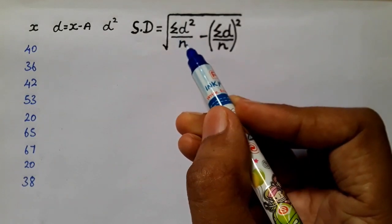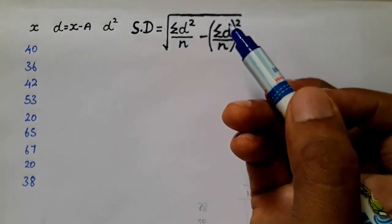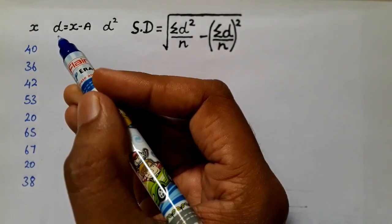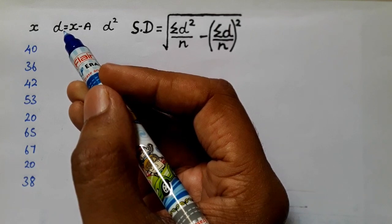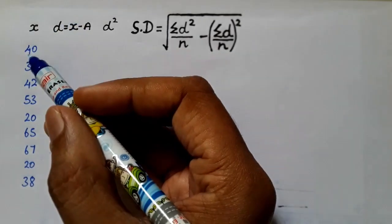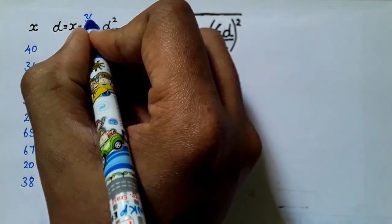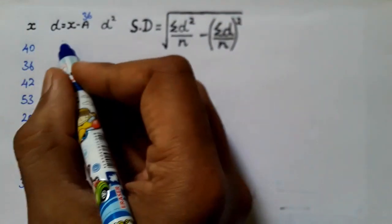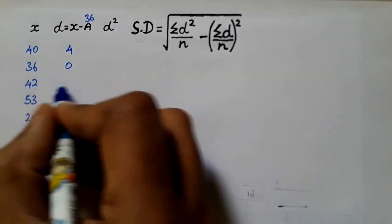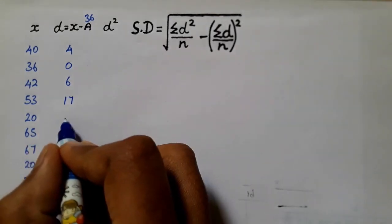Next is the standard deviation. The formula is: square root of sigma d squared divided by n, minus sigma d divided by n, the whole squared. Here d equals x minus a, where x is the value and a is the assumed mean. We take the assumed mean a as 36, the middle value. So d values: 40 minus 36 equals 4, 36 minus 36 equals 0, 42 minus 36 equals 6.